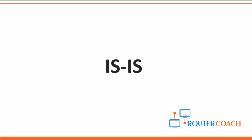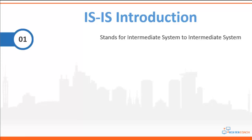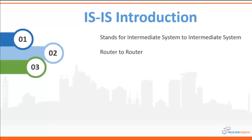In this next section we'll be looking at IS-IS, which stands for Intermediate System to Intermediate System. According to ISO terminology, an intermediate system is a router, so IS-IS means a router-to-router routing protocol. It was developed in the late 1980s by the Digital Equipment Corporation and adopted in its entirety by ISO, the International Organization for Standards.